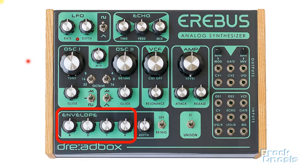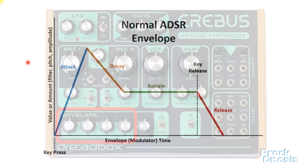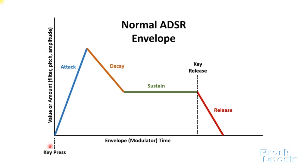A nice normal four-stage ADSR envelope, graphed out, might look like this. Somehow — usually through a key press — an envelope is triggered. The attack phase starts, then the decay stage, then it moves to the sustain stage, which usually loops until the key is released, and then it wraps up with a release stage. An envelope is really just a series of values used to modulate or change some other settings or parameters on a synthesizer over time. In the case of the Erebus, it's used primarily to control the amount of filter cutoff, though that same envelope can be patched to affect other parameters — including amplitude or even oscillator pitch.